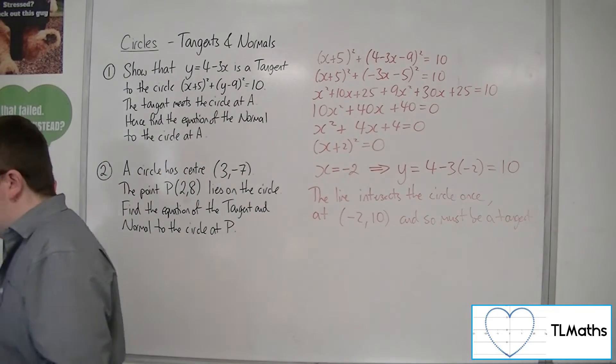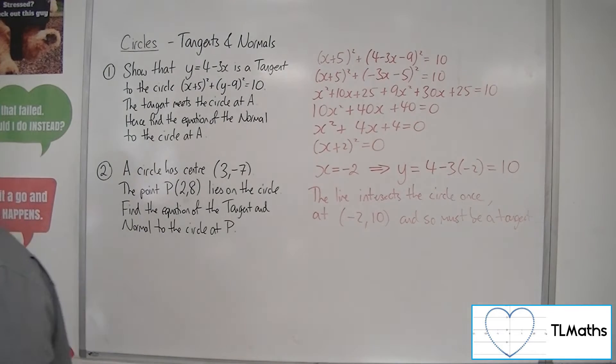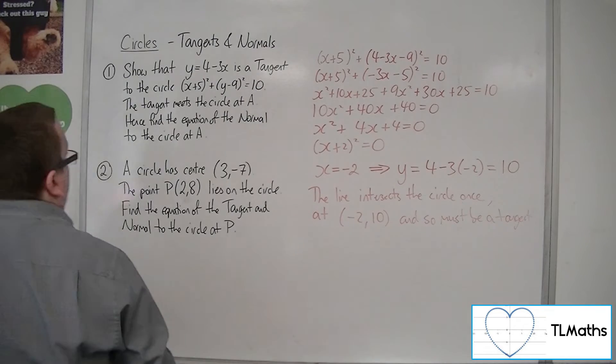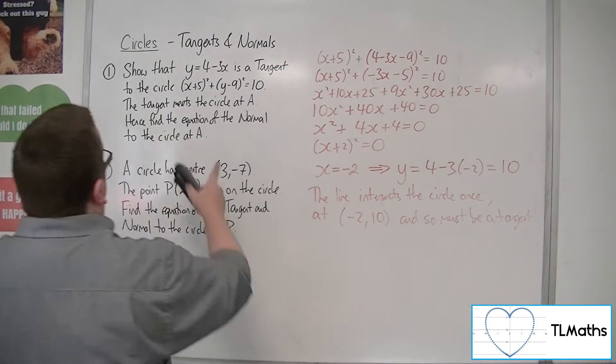The fact that the line intersects the circle at only one point means that it must be a tangent line. So that's question number 1. Oh, I haven't quite finished it yet.